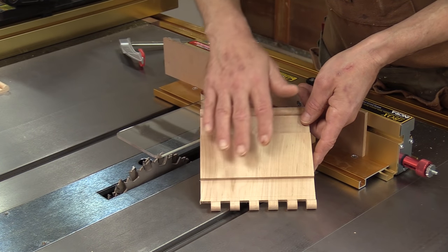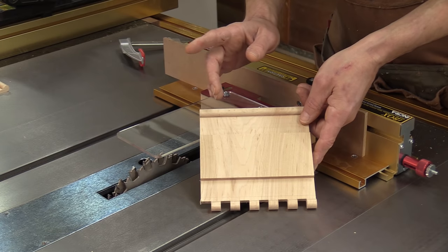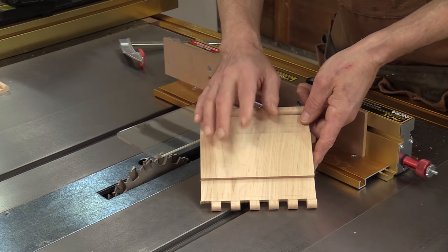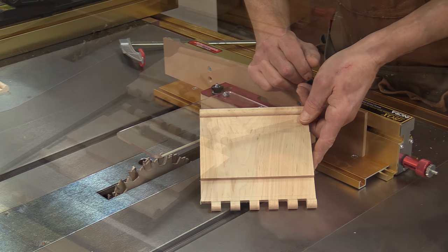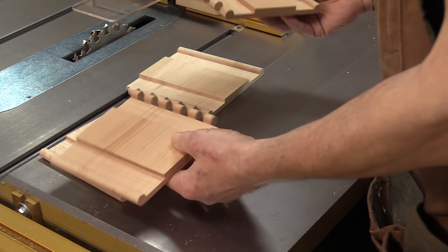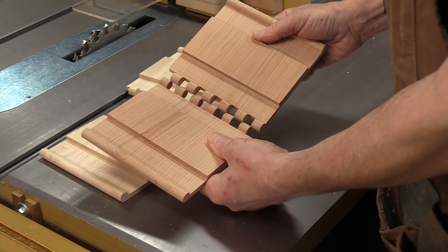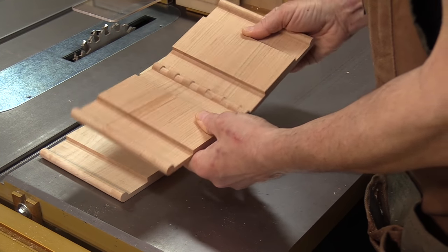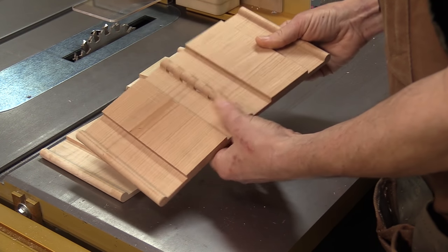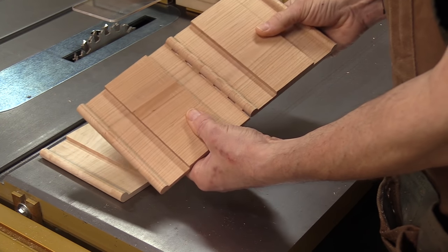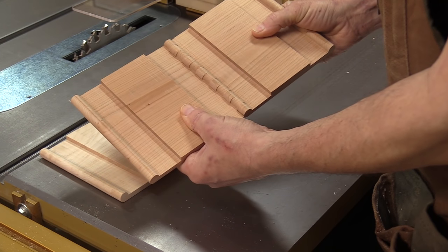Well that's what the cuts look like on the first blank. I'm going to go ahead and do the other three but I'm only going to do one side of the blanks for now. So I've got the first set of fingers cut and this is how they come together. They're snug but not real tight so you can move them around but the biggest thing is there's no top to bottom play at all.